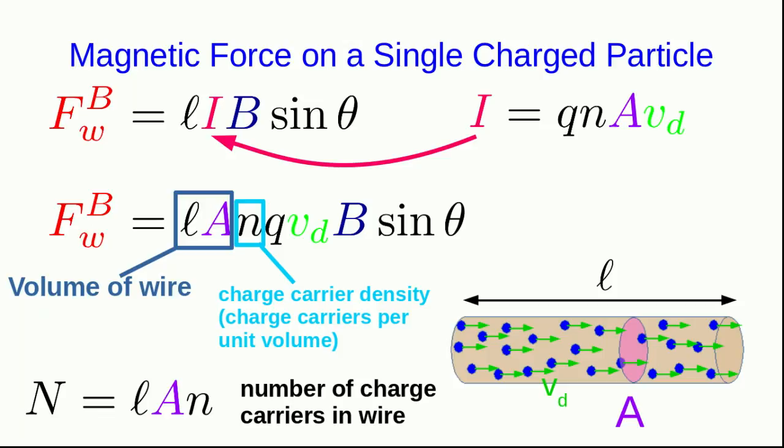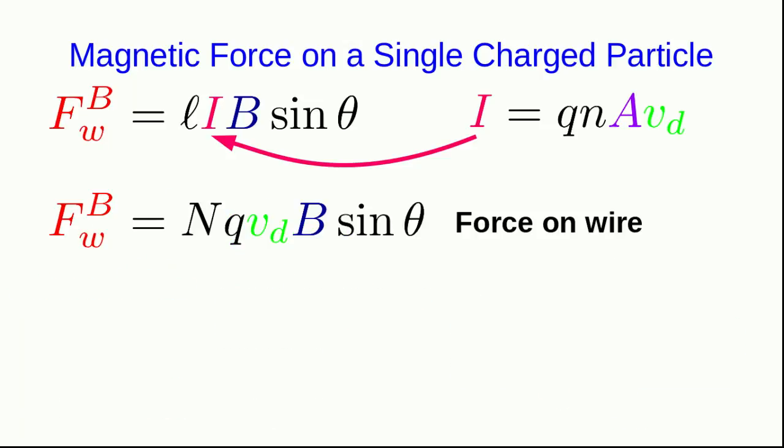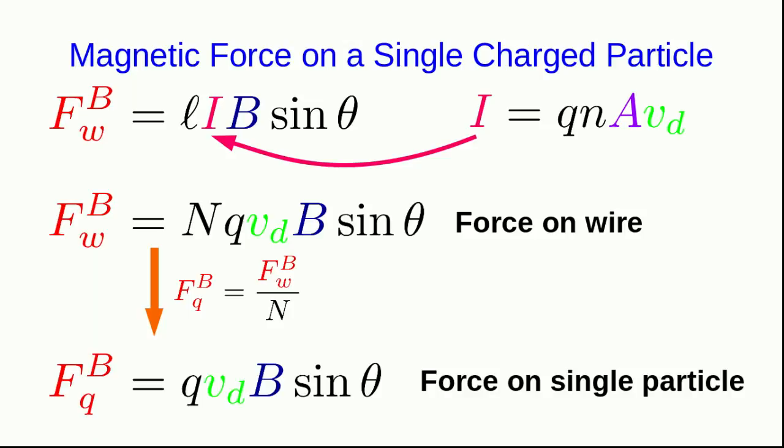And so LaN is the total number of charge carriers that are moving in the wire. So with that, we can rewrite our force on the wire using that N, the capital N, which represents the total number of charge carriers that are moving in it. And now if you want to know the force that is on each of those charge carriers, you just have to divide that by N, which just gets rid of the N. And so here is the magnitude of the magnetic force acting on a single particle in the wire.